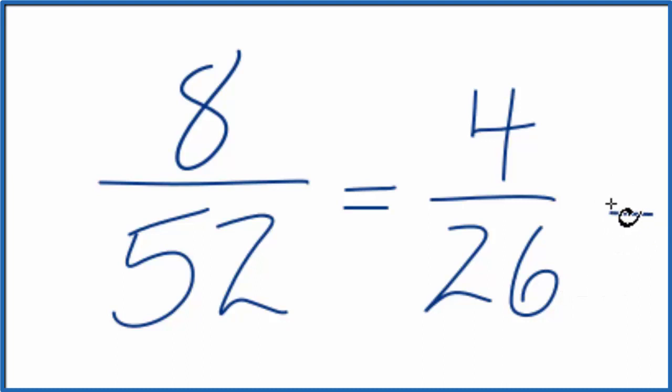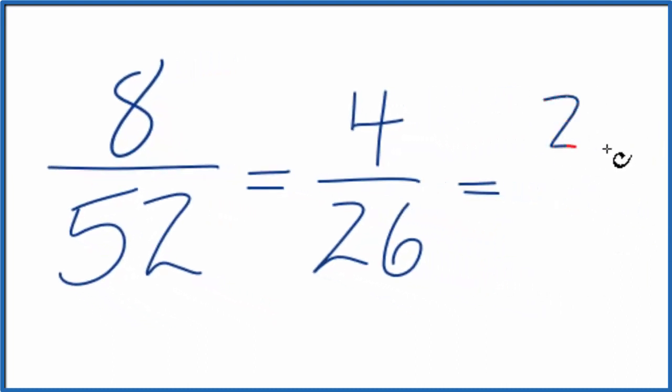We could divide by 2 again. 4 divided by 2, that's 2. And 26 divided by 2 is 13. And we can't reduce this or simplify this fraction any further.